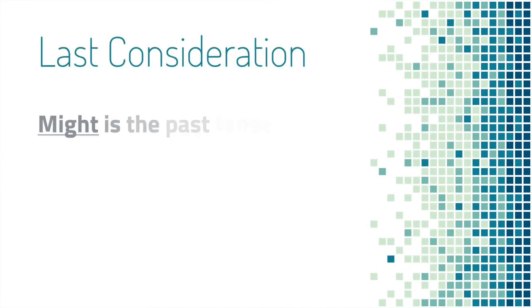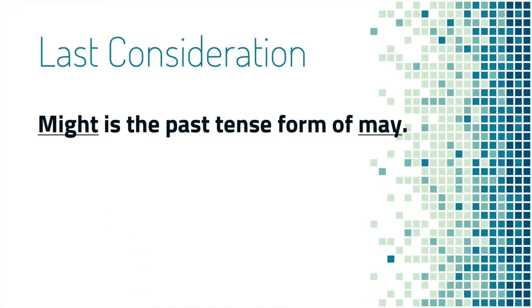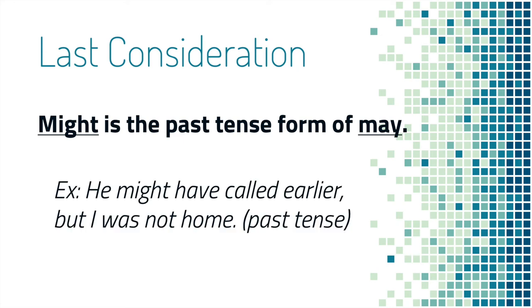One last consideration: might is the past tense form of may. So I can say, he might have called earlier, but I was not home. This is the past tense — so he probably called earlier, but I wasn't home.